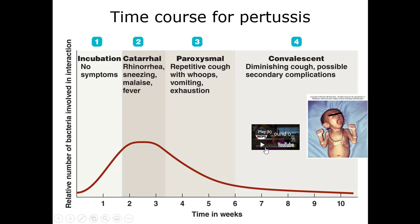The time course for pertussis: if someone coughs on you and you weren't vaccinated, this is measured in weeks, not days. For about a week and a half, you have no symptoms at all — but the bacteria are reproducing and not yet causing enough damage for symptoms to appear. Then we get into the catarrhal phase, which can take a week and a half to two weeks. This is when you start to have initial symptoms: rhinorrhea, runny nose, sneezing, fatigue, and fever — you probably think you came down with something, but most colds go away in that time.